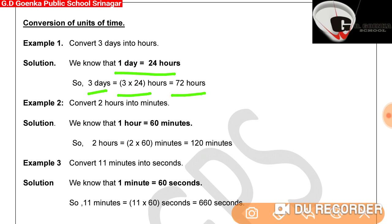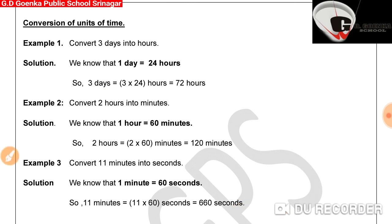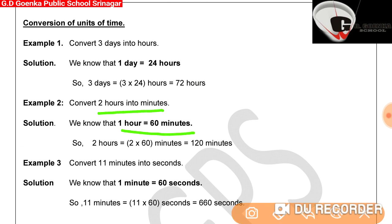In the second example, convert two hours into minutes. We know that one hour is equal to 60 minutes. Therefore, two hours will be equal to 2 into 60 minutes, which is equal to 120 minutes.